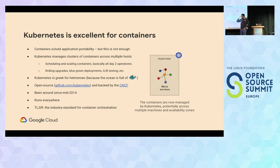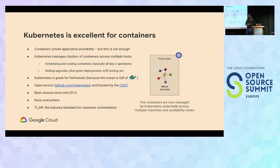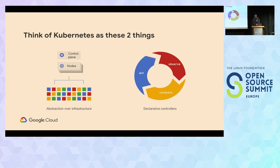Kubernetes was released in 2014. It's basically an abstraction layer on top of a bunch of machines or nodes — servers, laptops, Raspberry Pis, it doesn't matter. It's created to let you as a developer focus on the application and not on the infrastructure. You have a bunch of servers, you deploy Kubernetes as an abstraction layer on top of them, you talk to the Kubernetes cluster, and the cluster is the last thing you need to worry about.